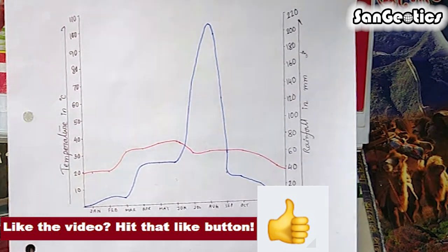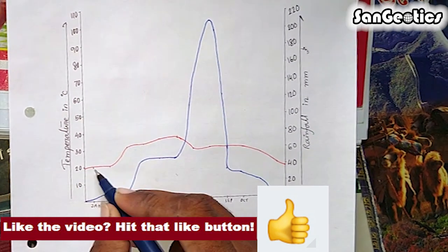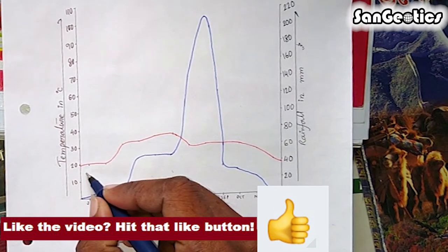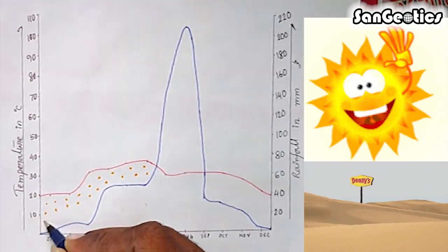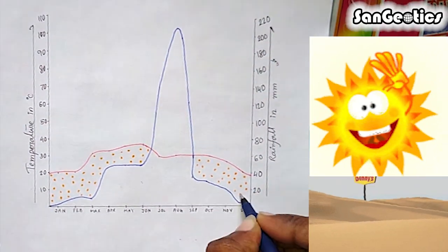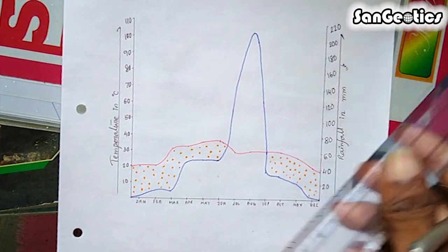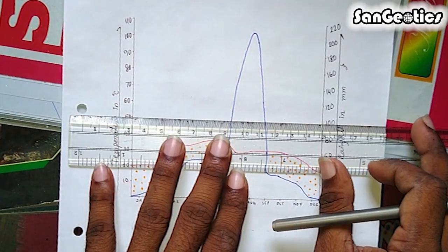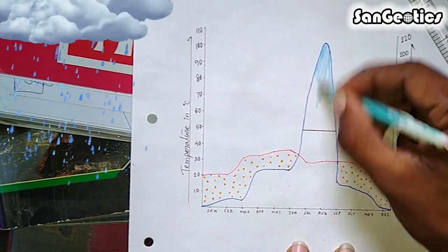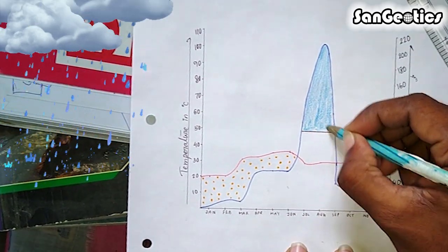When the temperature line runs above the precipitation line, there is a dry season. The area between the lines should be illustrated by filling it with dots. There is a practice of coloring portions which exceed 100 millimeters precipitation as a period with excess water with blue color.